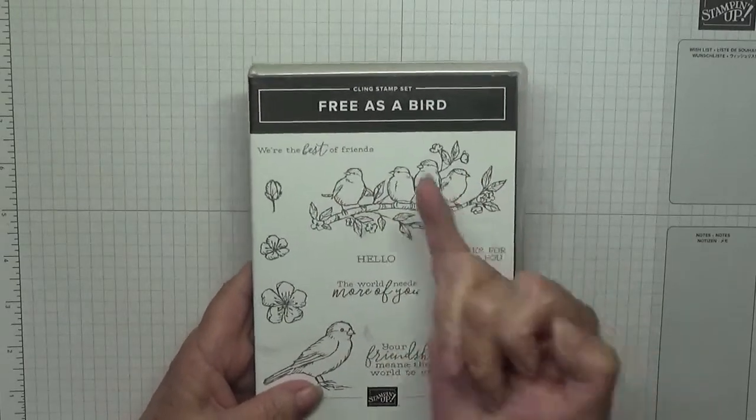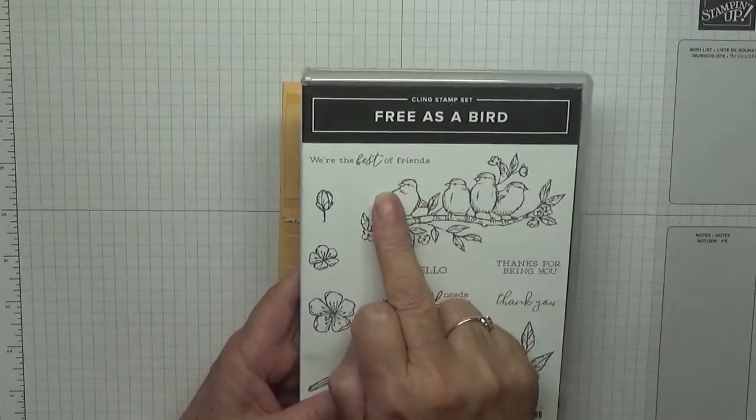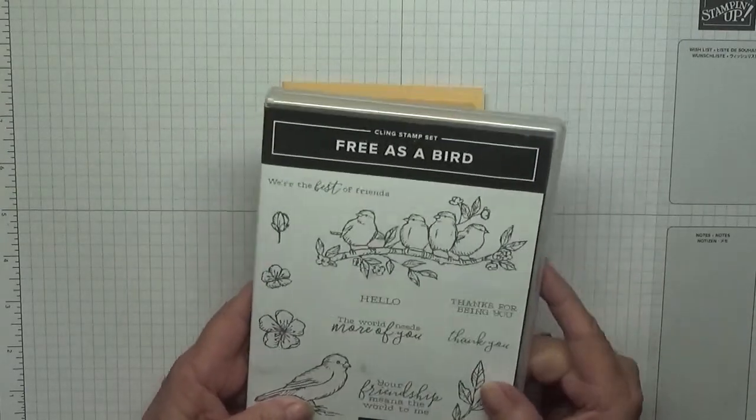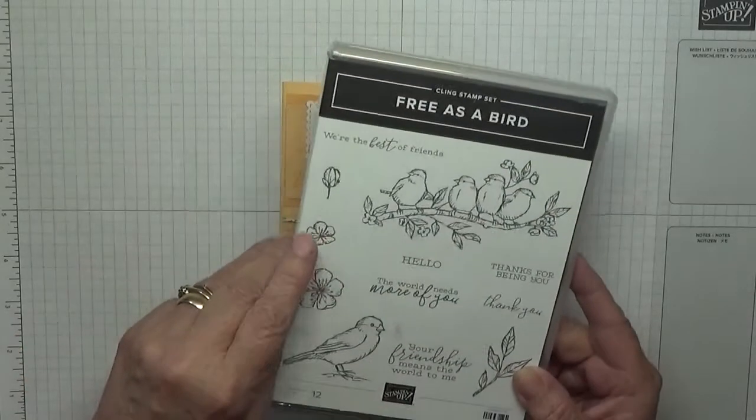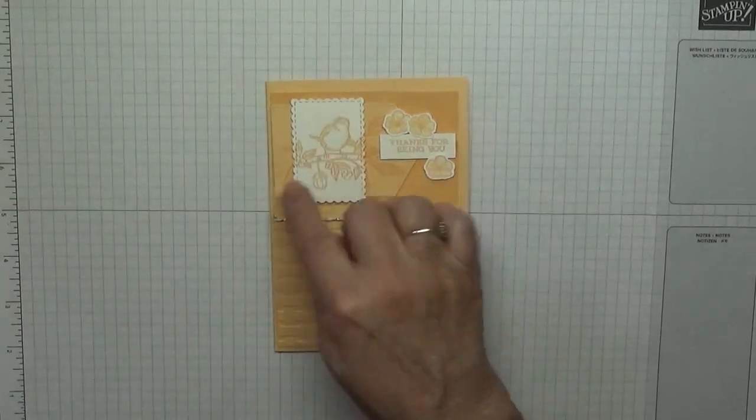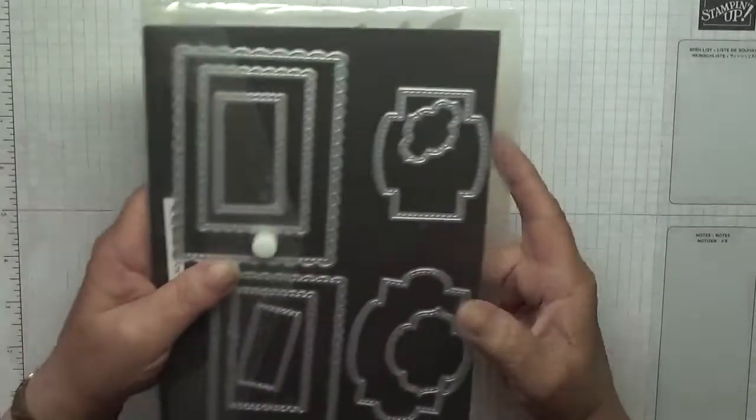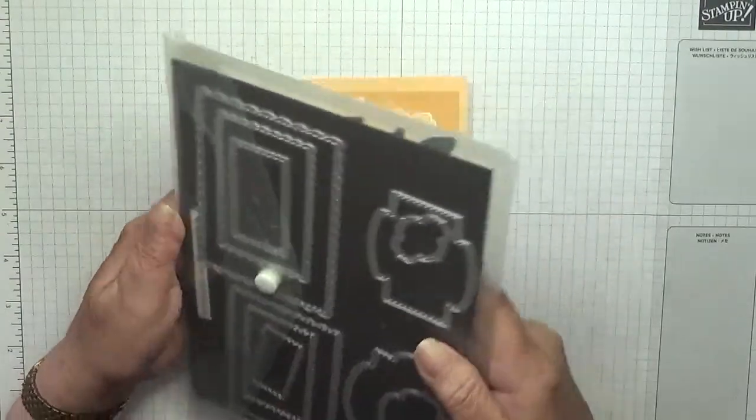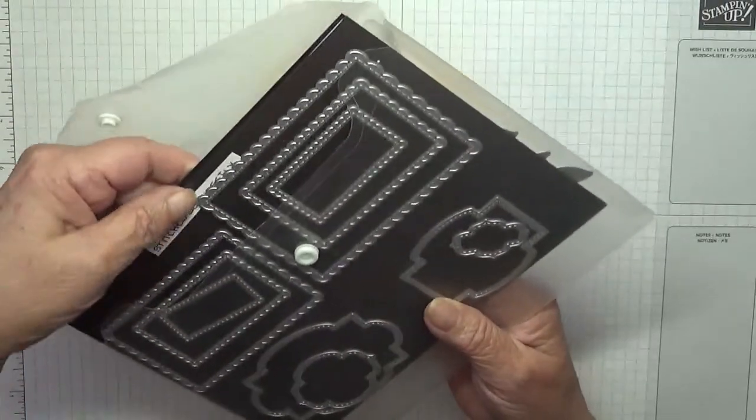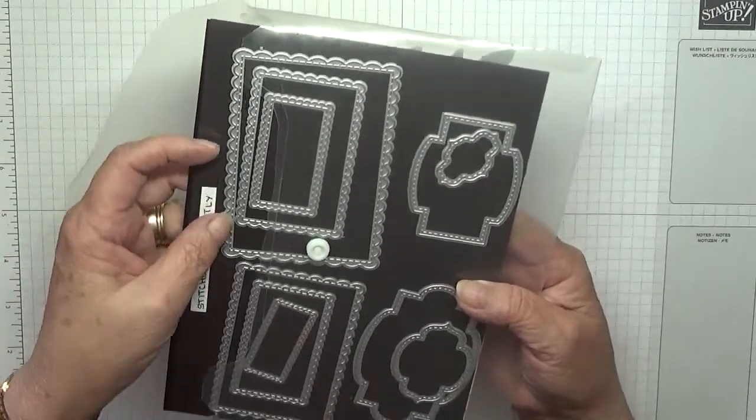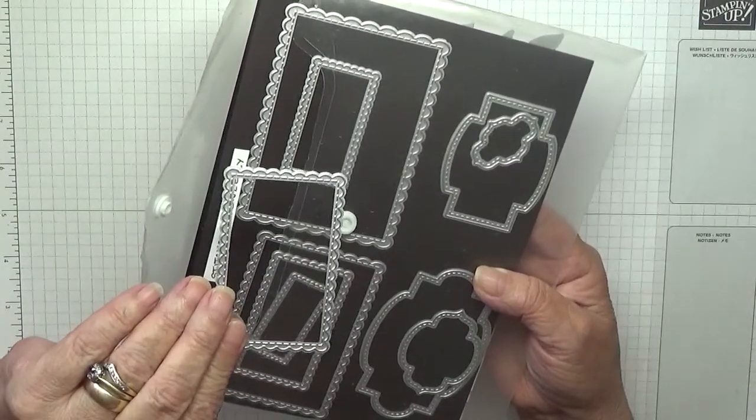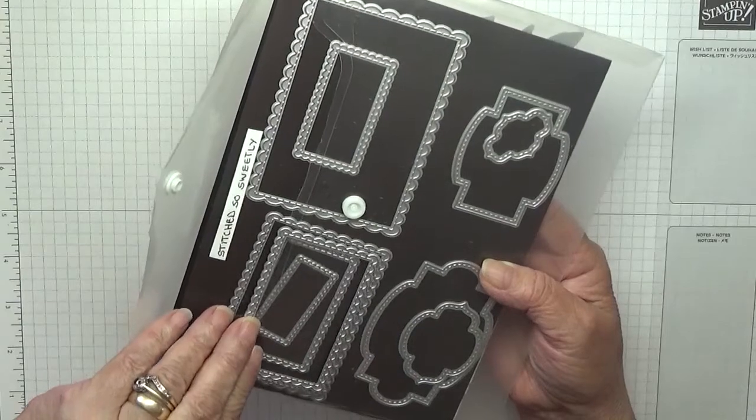I'm using this but I'm cutting it off from there, so I just have the last bird. The sentiment is Thanks for Being You, and these tiny flowers, three of them, to cut out where the bird is.